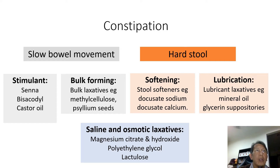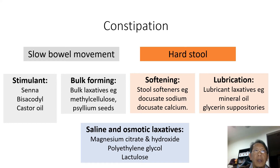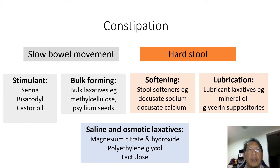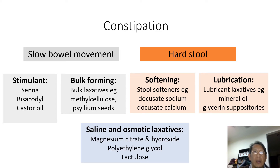Constipation can also be due to hard stool, so we need softening of the hard or impacted stool and lubricating action to ease passage through the rectum. For saline and osmotic laxatives, examples include magnesium citrate and magnesium hydroxide, as well as polyethylene glycol and lactulose. These are non-absorbable salts that hold water in the intestine by osmosis, distending the bowel and increasing intestinal activity.